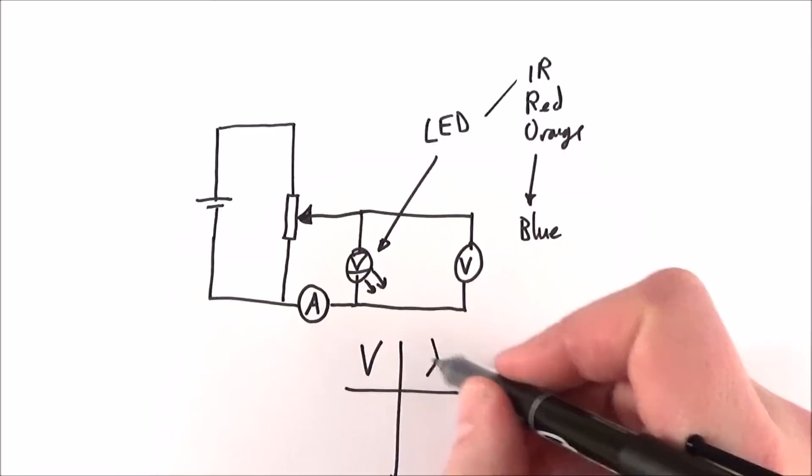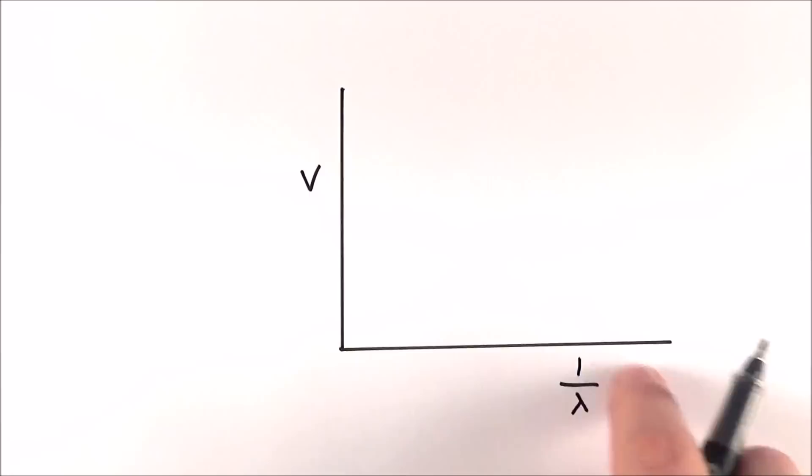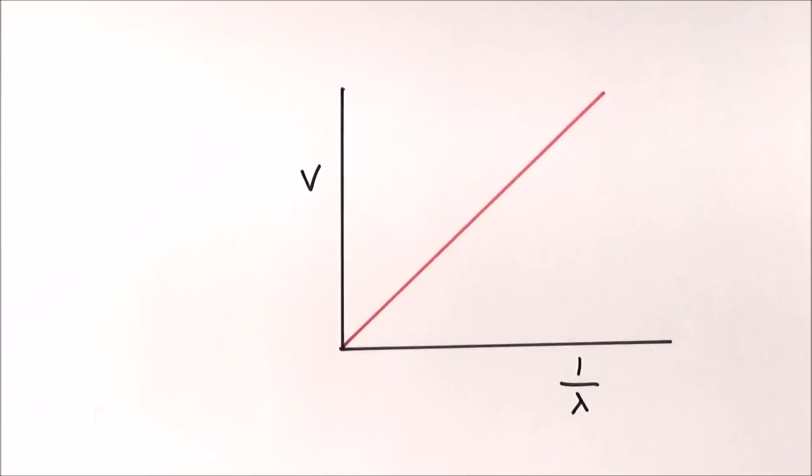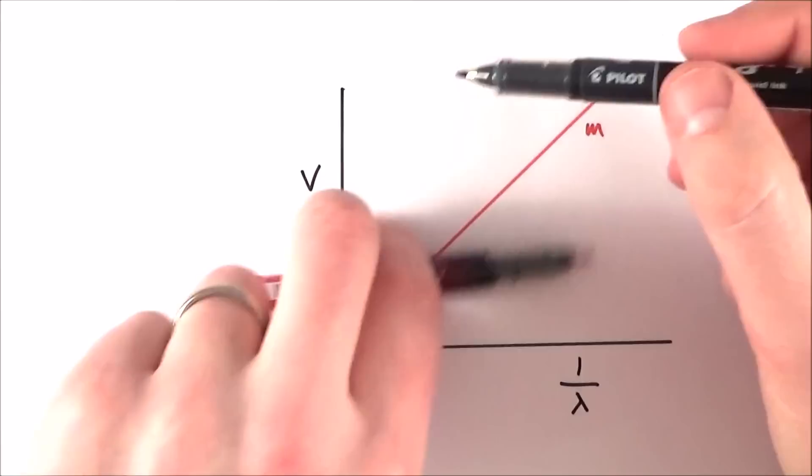Once we have enough results, what we can do is plot our graph with the threshold voltage on the y-axis, and a value of one over the wavelength on the x-axis, which seems a bit weird, but it will all become clear very soon. What we can then do is start to plot our data. And provided everything goes to plan, what you get is a graph that looks a bit like that. Once you've got the data, you can then maybe work out the gradient, and you'll find that the gradient m is equal to the change in y value, which is your threshold voltage divided by one over the wavelength, which is equal to v divided by one over lambda, which is just equal to v lambda. So this is what the gradient actually represents.